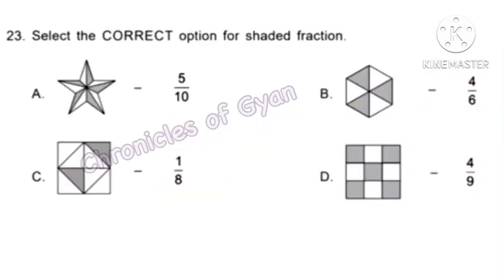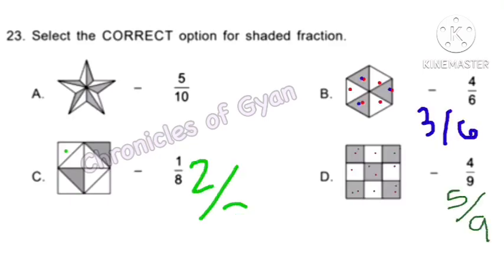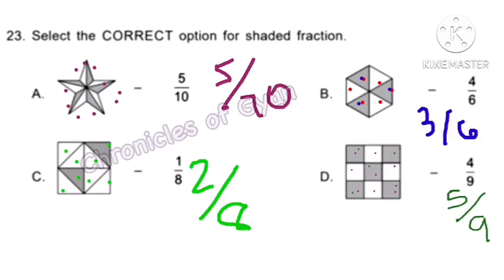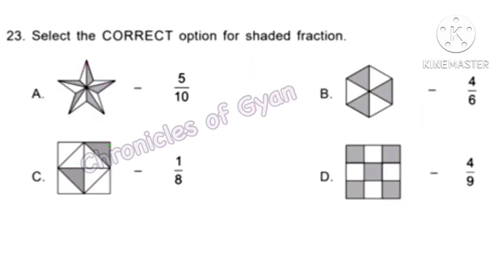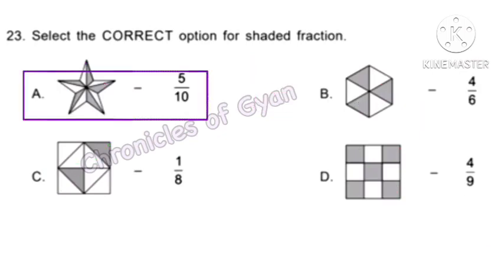Question 23. Select the correct option for the shaded fraction. In option A, there are 10 equal parts out of which 5 are shaded. The other options B, C, and D show incorrect shaded fractions. Hence option A — 5 by 10 — is the correct option.